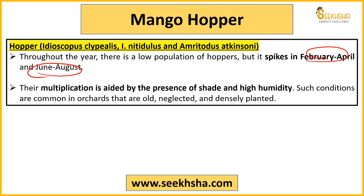The conditions which favour multiplication more are shade and humidity. If the region is more shady and humidity is more, then multiplication will be much faster. Orchards mein pedon ki wajah se — mango trees bade trees hote hain — toh shade waali situation hoti hai, humid areas hote hain. Toh definitely orchards ke andar yeh condition most suitable ek tarike se ban jaati hai is pest ki multiplication ke liye.